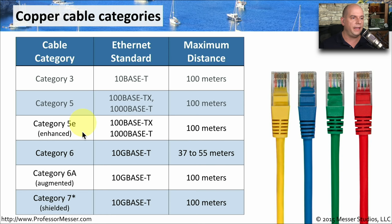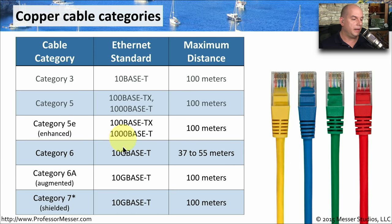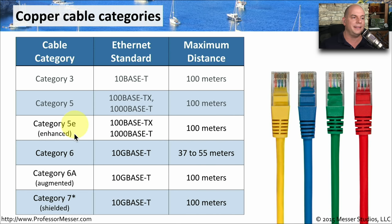Category 5E stands for enhanced, and it allows us to run 100Base-TX and 1000Base-T up to 100 meters. Category 5E was created because the 1000Base-T gigabit connection was extending to 100 meters, but there were certain situations where the signal was not as strong as desired. So Category 5E was created as an enhancement to improve 1000Base-T distance so that we could reliably get 100 meters in the largest number of environments.